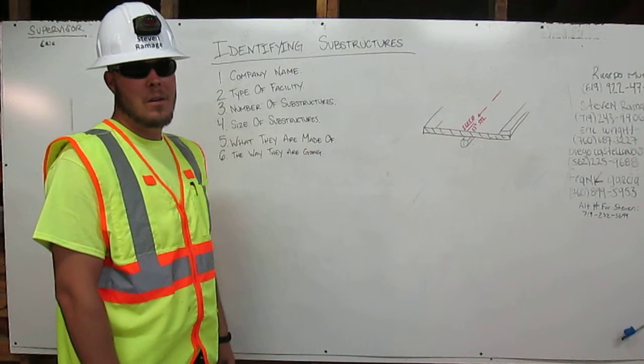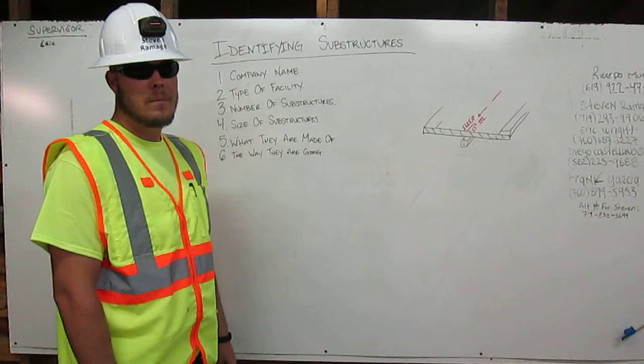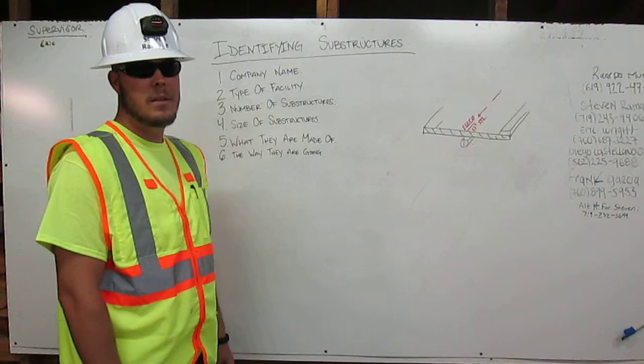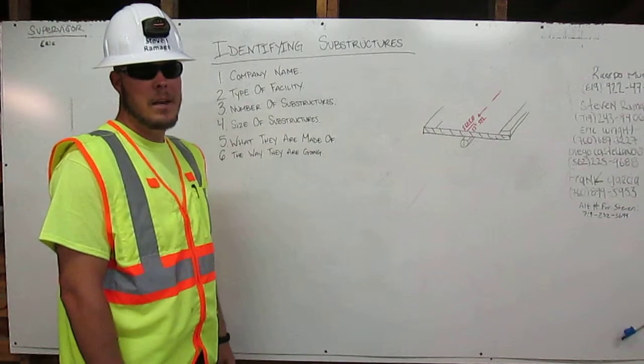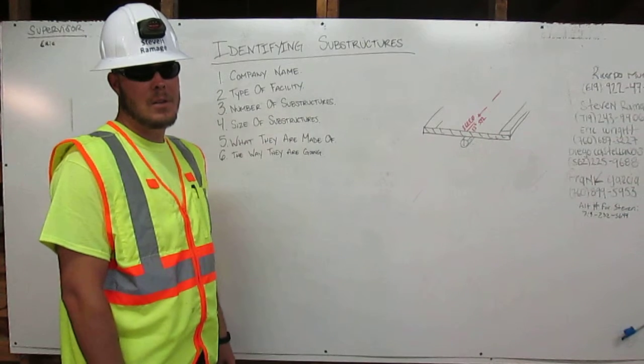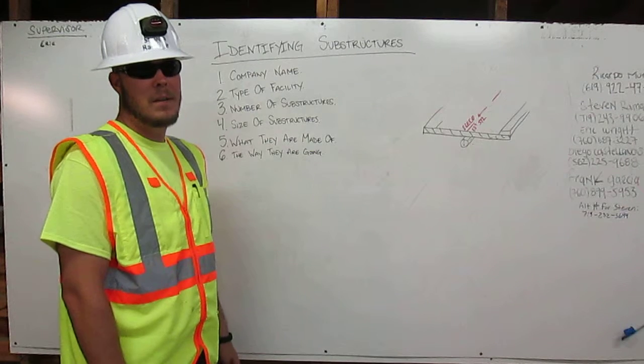Facility operators are required to provide excavators with information regarding their substructures. They leave markings that tell us their company name, the type of facility, number of substructures, size of the substructures, what they're made of, and the way they're going.